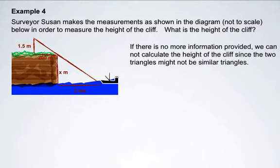If there's no more information provided, we cannot calculate the height of the cliff since the two triangles in this case may not be similar triangles. Later on in math you will learn about trig ratios, in which case you might have enough information to be able to solve this.